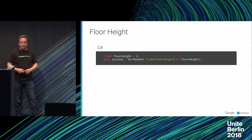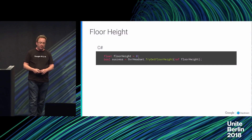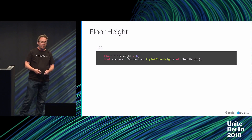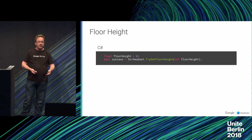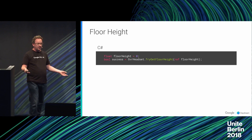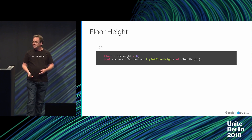The GVR headset provides a simple property getter for getting the floating-point value of floor height. You can get this at any time and it will change in real time as the headset better understands the environment, but as noted, don't update it constantly.